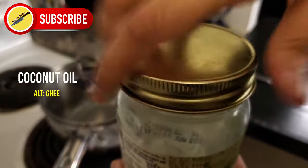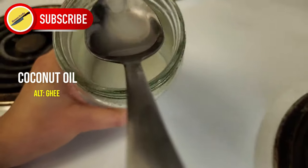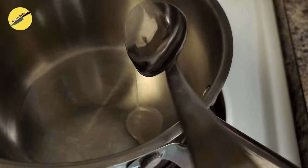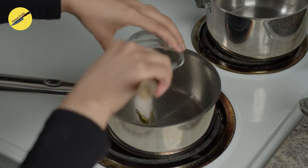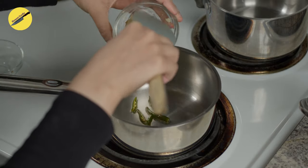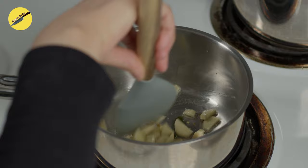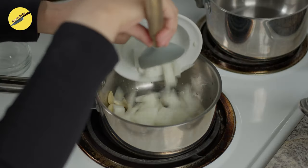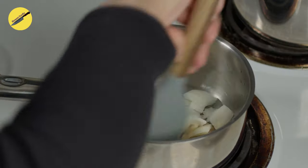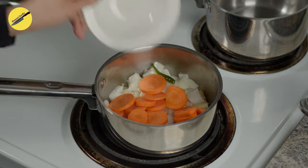But ghee probably would be more traditionally accurate. Whichever oil you are using, once that is hot, pop in the green chilies and the ginger. Lightly sauté them and add in the white onions and the carrots. Follow that with a cup of water to cook down the vegetables.